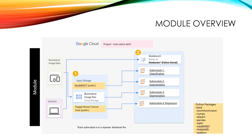This diagram provides an overview of the module's organizational structure. You will use biomedical image data stored in the cloud, as well as two public data sets: MedMNIST and the Kaggle breast cancer data. You will interact with a Vertex AI workbench, and during the module you will use a variety of Python packages, including Torch, TorchVision, Numpy, SKLearn, Pandas, and several others.